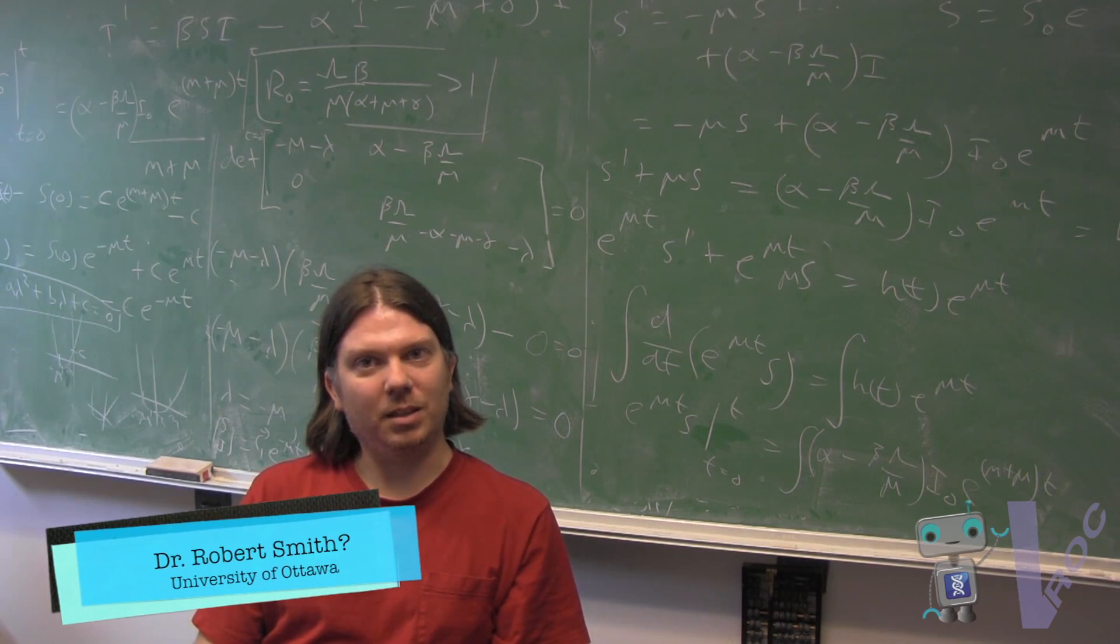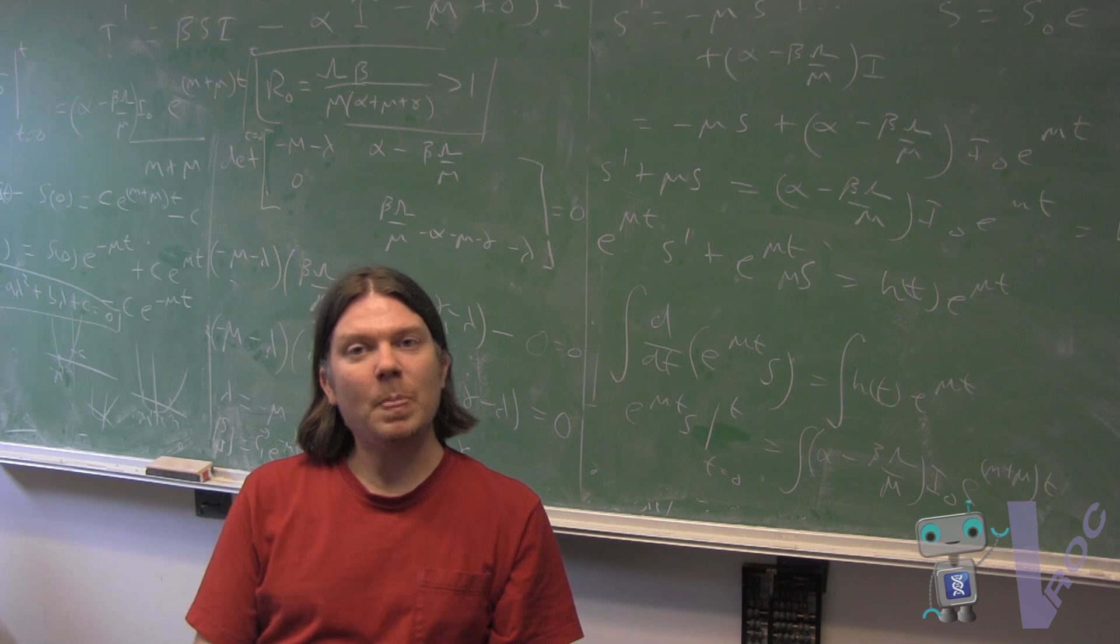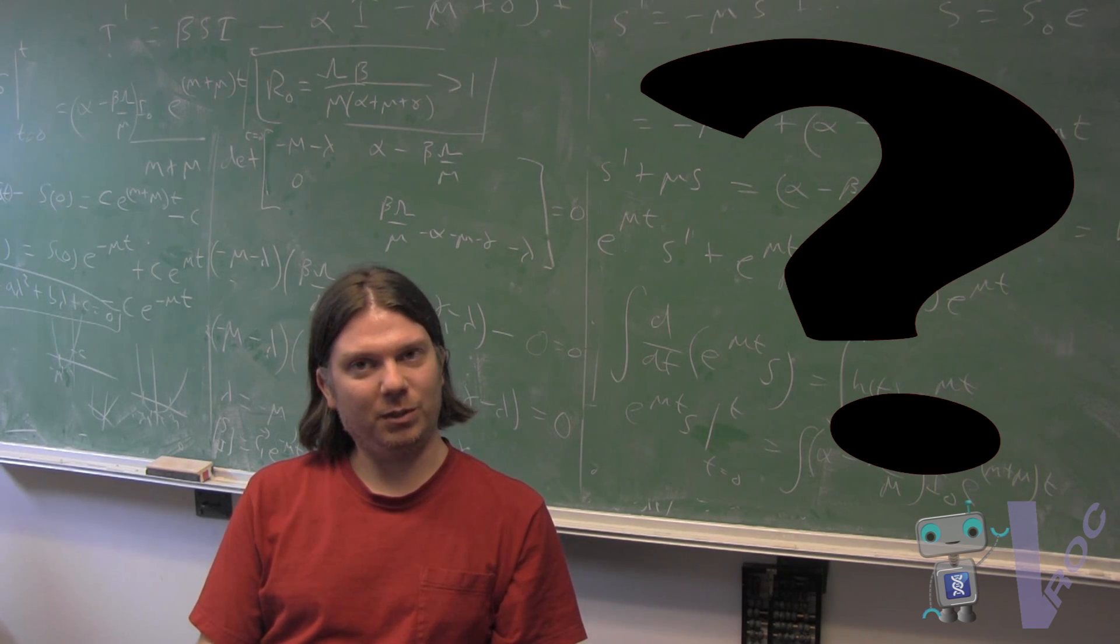My name is Dr. Robert Smith. I am an associate professor at the University of Ottawa. My surname is Smith with a question mark because I have a very common name.